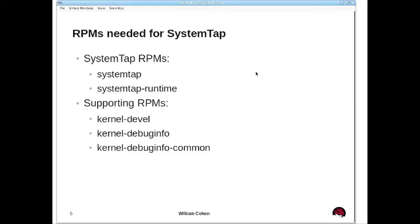To install SystemTap, you'll need to install the systemtap RPM and the systemtap-runtime RPM. The systemtap RPM is the translator that converts scripts into something that runs, while systemtap-runtime has the stuff needed if you're just running already-built scripts. To build scripts you also need the kernel-devel RPM, and if you're instrumenting things in the kernel you'll need kernel-debuginfo and kernel-debuginfo-common to provide information about data types.